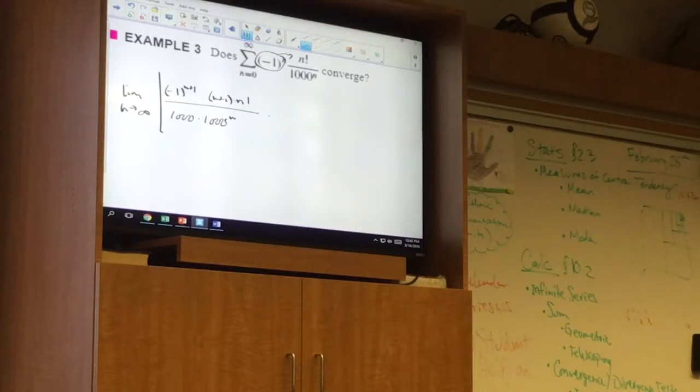And then divided by the nth term, which is the same as multiplied by the reciprocal of the nth term. And this is what I have. Make sure that that makes sense to you. Does that make sense? Okay, so now let's cancel out the n factorials and the 1,000 to the n.